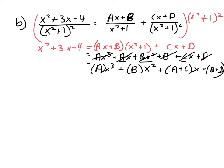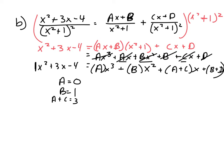Comparing to the left-hand side x squared plus 3x minus 4: there's no x cubed term on the left, so a must equal 0. The x squared coefficient is 1, so b must equal 1. The x coefficient is 3, so a plus c equals 3. And the constant term is negative 4, so b plus d equals negative 4. That gives the system: a equals 0, b equals 1, a plus c equals 3, b plus d equals negative 4.